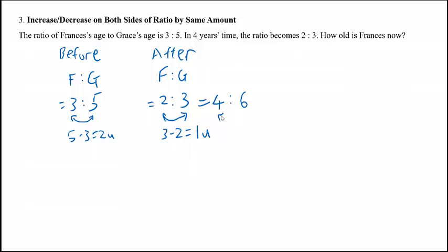So in this case, when I minus off the ratio, I will get a difference of 2 units.